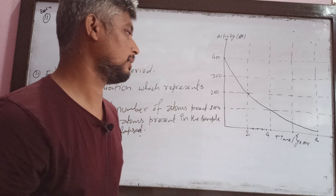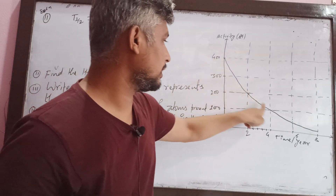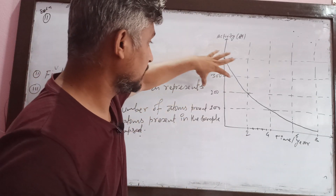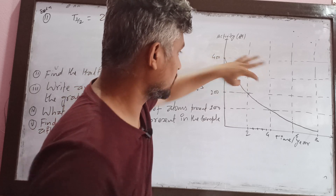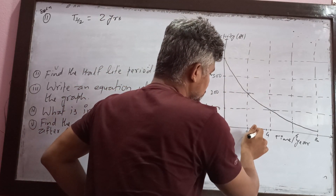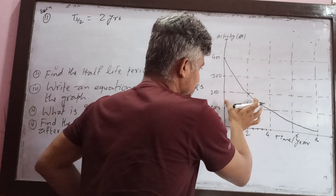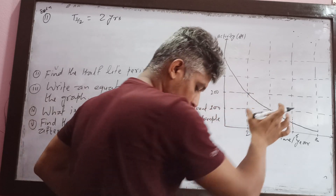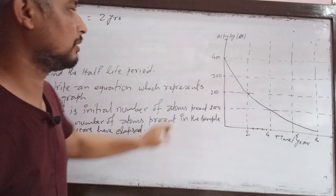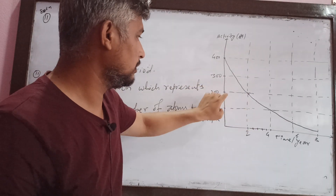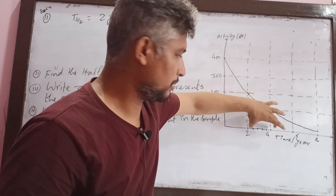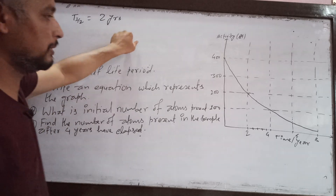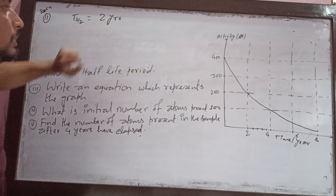You cross the graph and you can read off the time. You can get the same number by reading two points from the graph. The activity goes from 400 to 200 Becquerel, giving two half-lives. So T-half is equal to 2 years. This directly answers question two.